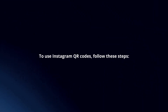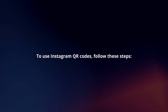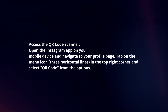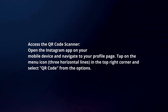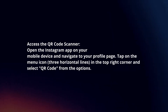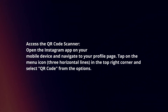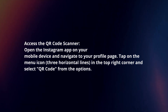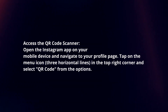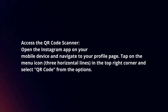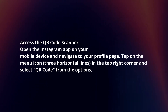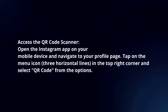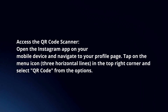To use Instagram QR codes, follow these steps. Access the QR code scanner. Open the Instagram app on your mobile device and navigate to your profile page. Tap on the menu icon in the top right corner and select QR code from the options.